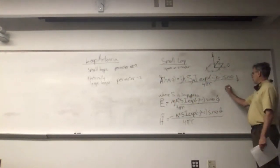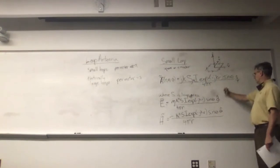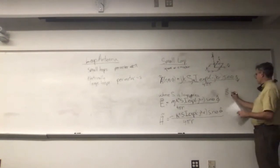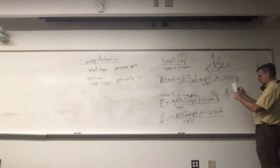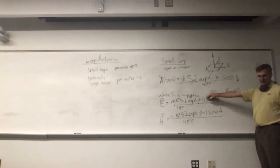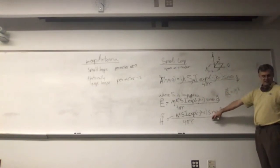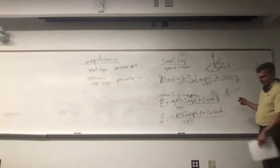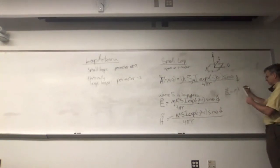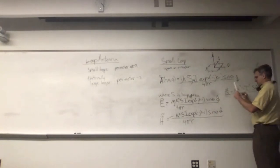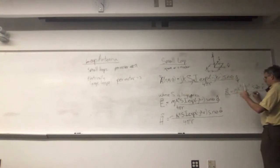If we wanted to calculate the Poynting vector, that's going to be equal to eta times k to the fourth S squared current squared sine squared theta r hat divided by 32 pi squared r squared.